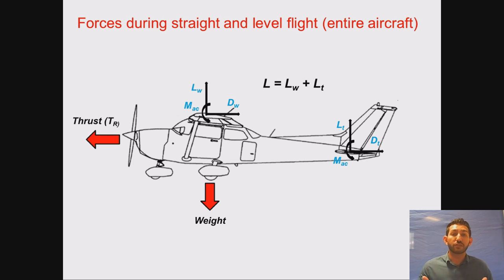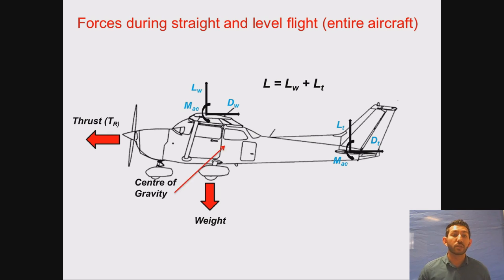If we take the lift term and expand it further, the total lift produced by the aircraft is the sum of the lift from the wing and the lift from the tail. Even though the lift from the tail is comparatively smaller than the lift produced by the wing, the moment produced about the centre of gravity could potentially have a larger effect due to its distance from the centre of gravity.